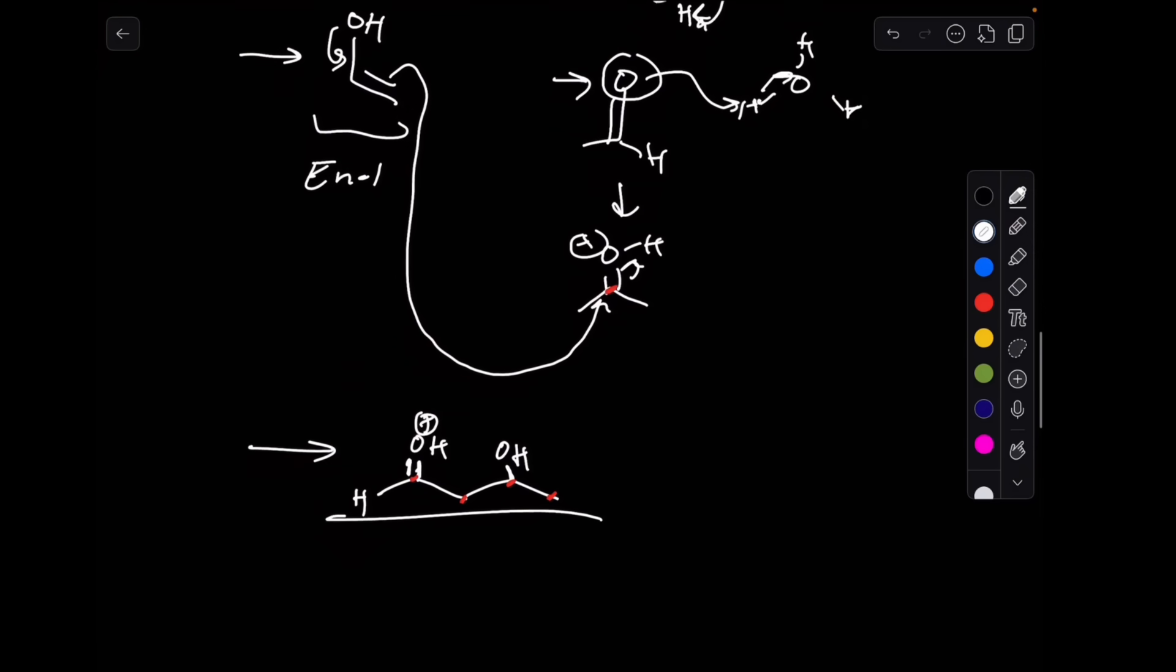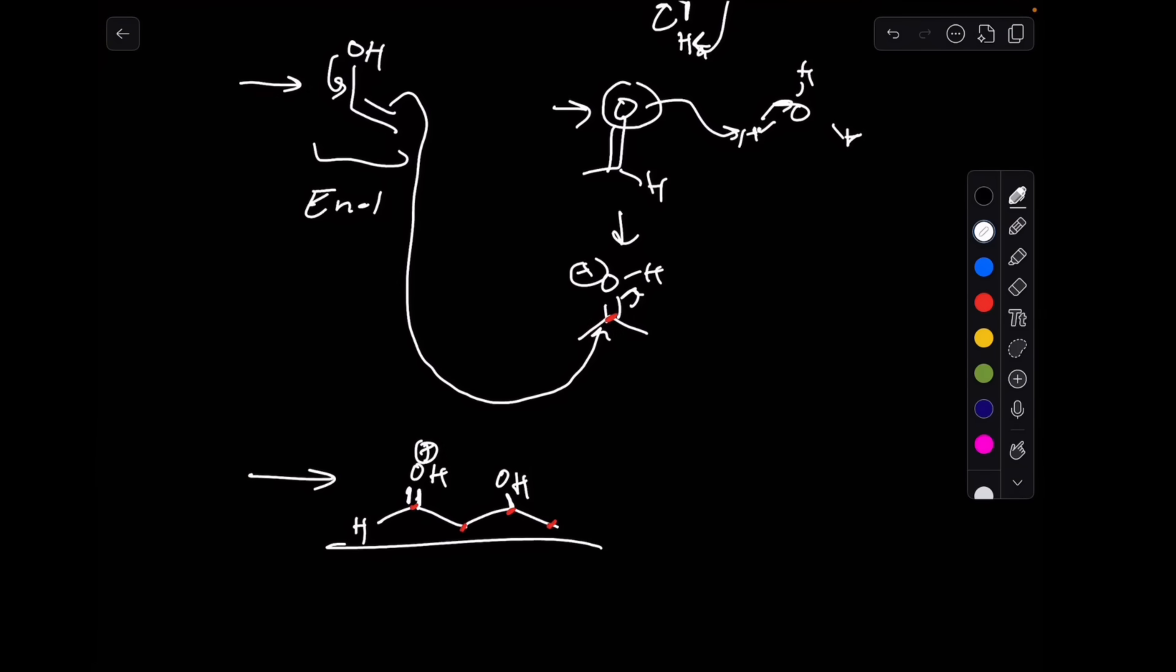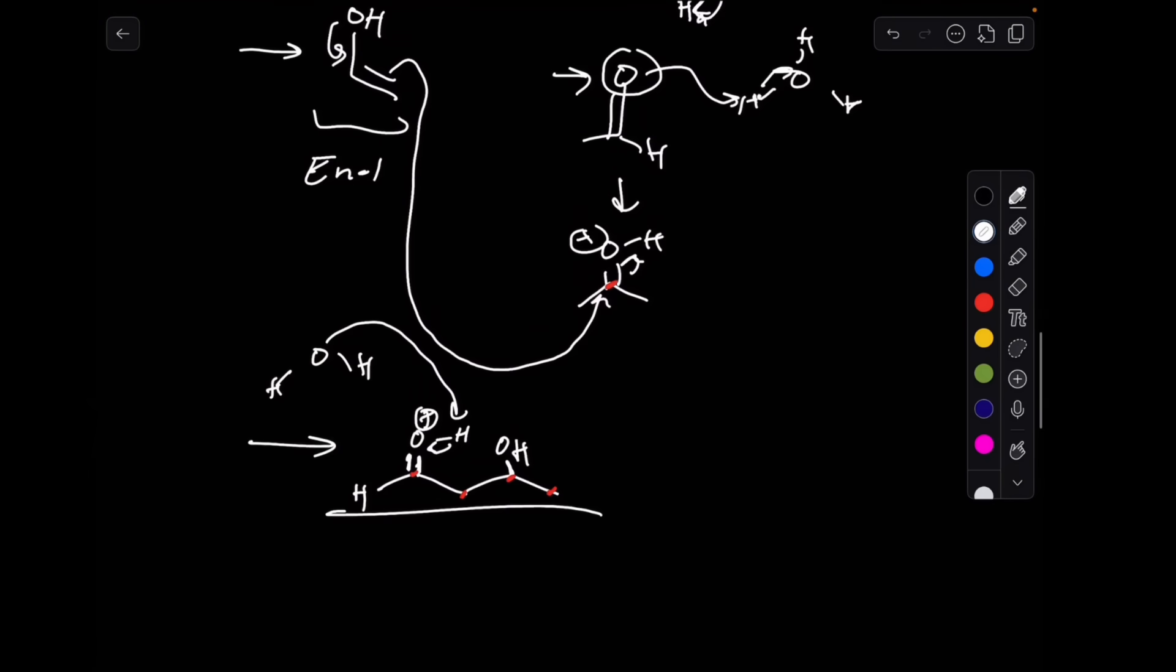We're almost done. We want a neutral atom now without a positive charge, so we're going to use water, our solvent, to abstract this hydrogen, which will push the electrons back.